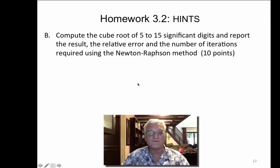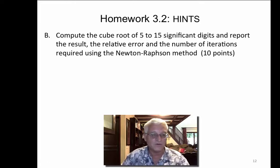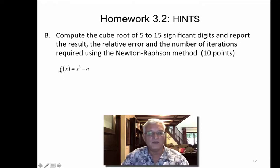Let's move to hints for problem B. This is the one where we're trying to get the cube root of 5 to 15 significant digits. You need to come up with an equation which has a solution of the cube root of 5. Remember that's how Newton-Raphson works. You want to come up with the equation where x cubed minus a equals zero. The only time that happens is if x is the cube root of a. That will force that equal to zero.